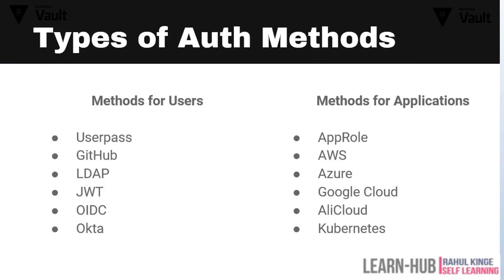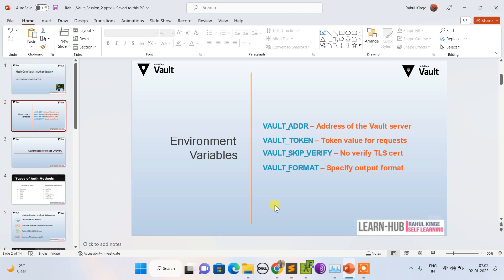Talking about types of auth methods, we divide them into two categories based on how a user is using the auth method versus how an application is using it. When a user is dealing with authentication, we can use user-pass, LDAP, or token. When an application is dealing with authentication, AppRole is the suggested way.